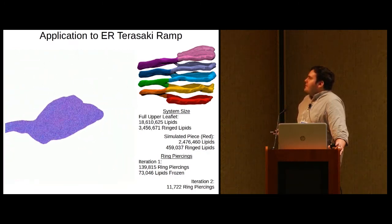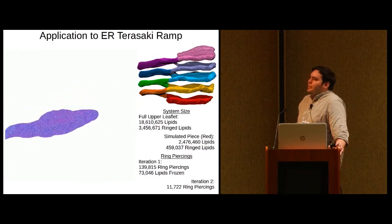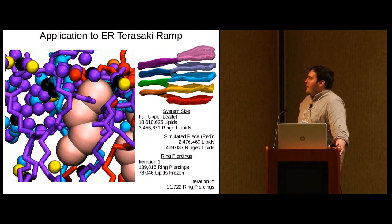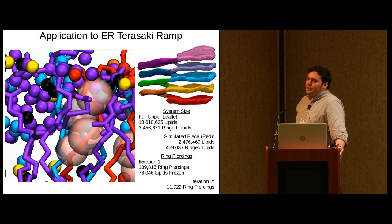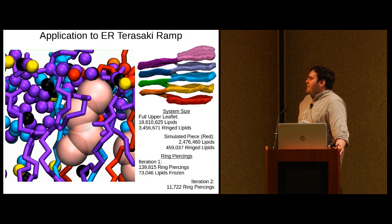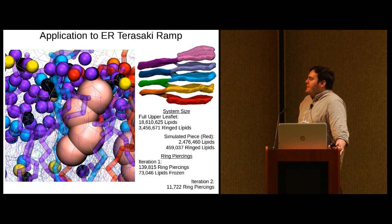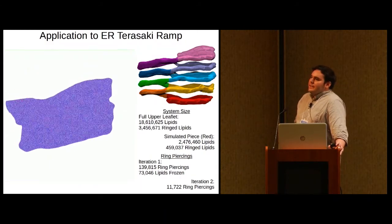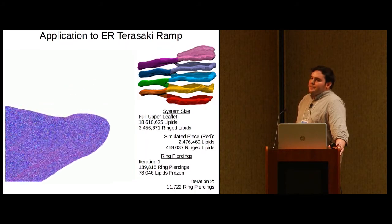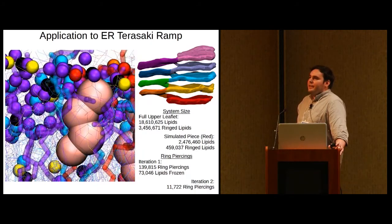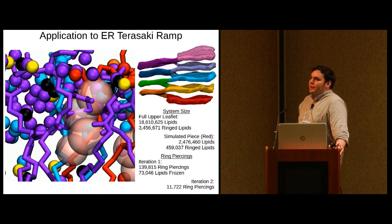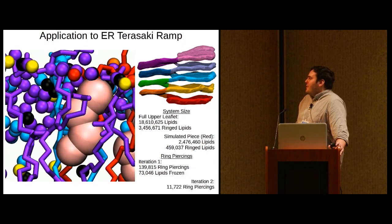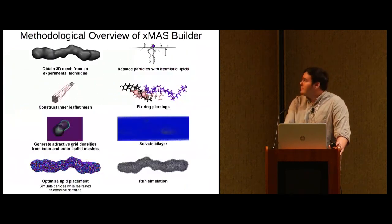This piece has 2.5 million lipids in it, of which about half a million are ringed. And in the initial model, XMIS Builder detected 140,000 ring piercings. Through 500 steps of minimization, we were able to get down to 12,000 ring piercings, which is consistent with the results that we saw for the smaller system, where the number of ring piercings was decreased by about an order of magnitude after each iteration. And further iterations to resolve more ring piercings are ongoing.